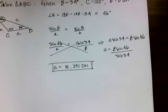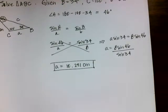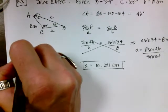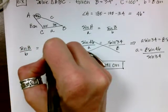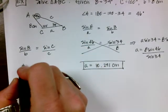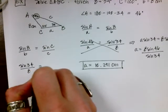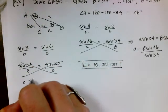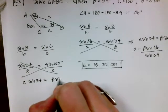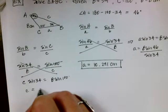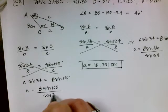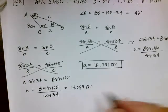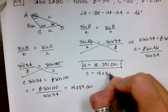The next piece to solve for is little c. I'm going to use angle C and angle B again — I don't want to use information I've already found in case I made a mistake. The sine of B is to b as the sine of C is to little c. Substituting: sine of 34 is to 8 as sine of 100 is to little c. Cross-multiplying: c × sine 34 = 8 × sine 100. So c = 8 sine 100 divided by sine 34, giving c equals 14.089 centimeters.